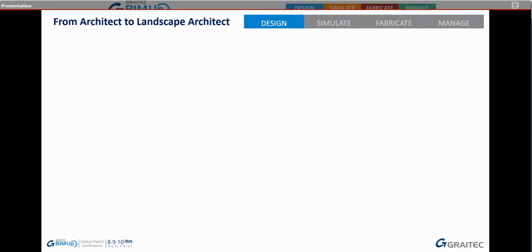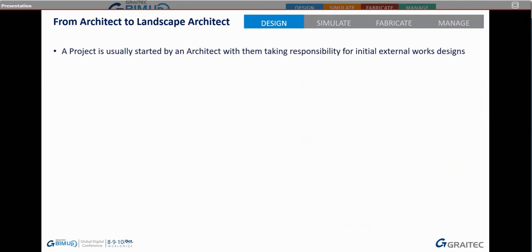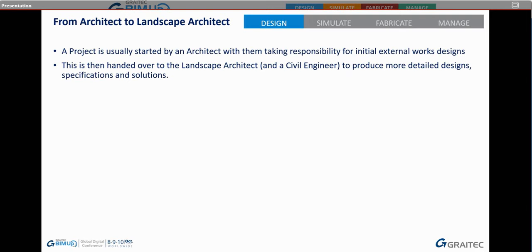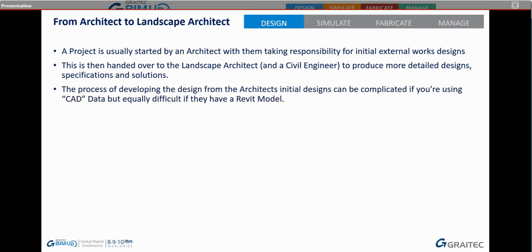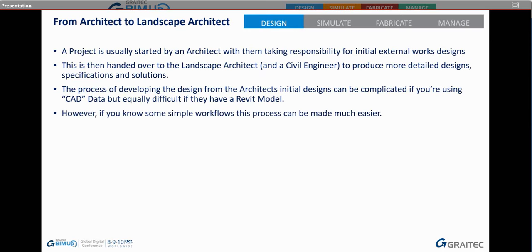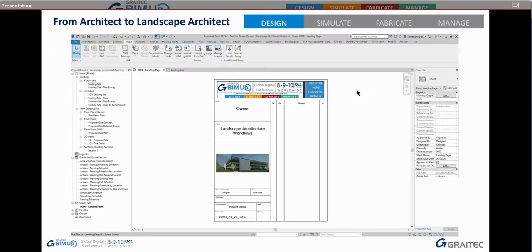A project is usually started by an architect, with them taking responsibility for external work designs. This is then handed over to the landscape architect and civil engineer to produce more detailed designs, specifications and solutions. The process of developing the design from the architect's initial designs can be complicated with CAD data, but equally difficult if they have a Revit model. However, if you know some simple workflows, this process can be made much easier.